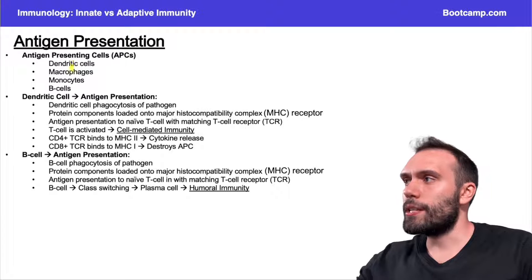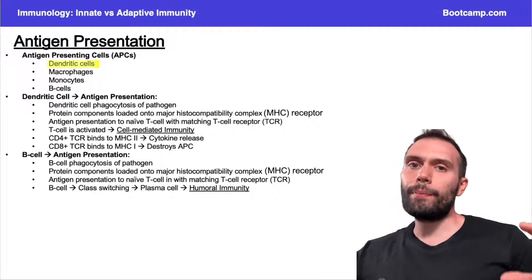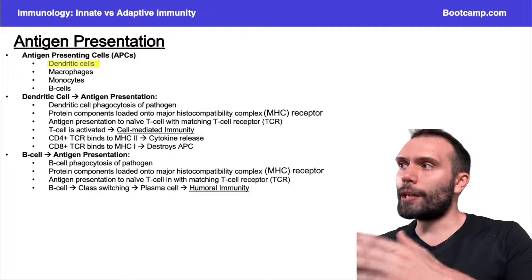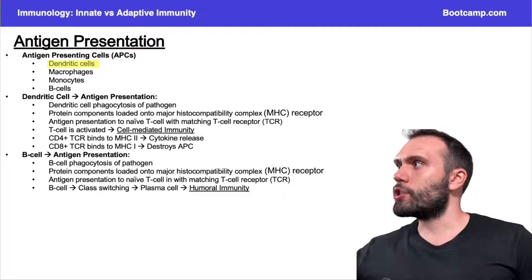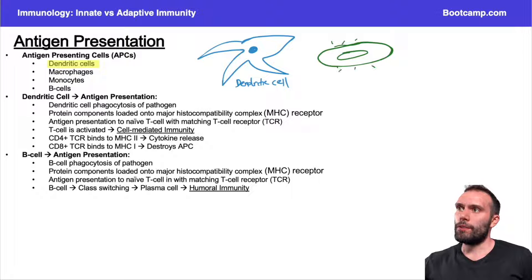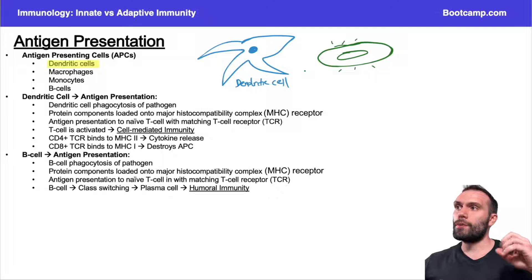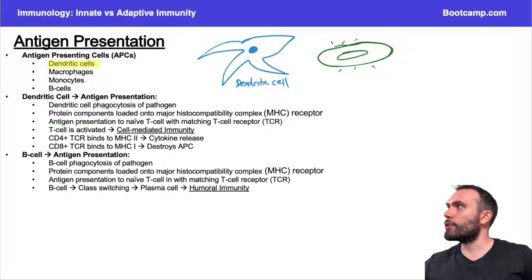It's easy to get lost in the details here, so let's first see how this process starts. Dendritic cells are going to be our poster child for antigen presentation. Going back to the example from the last video — some bacteria came into the bloodstream. The dendritic cell runs into this pathogen, undergoes phagocytosis, eats and digests the pathogen. After digesting the pathogen, it can present components of that pathogen on its surface.